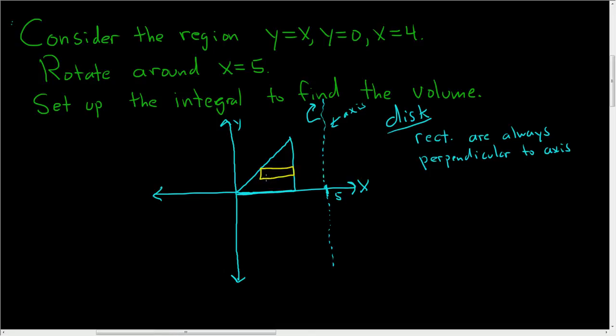If you're using the shell method, then it's parallel. So if you were using the shell method, your rectangle would have looked like this. That would have been with the shell method. But it's disk, so you make sure it's perpendicular to the axis.